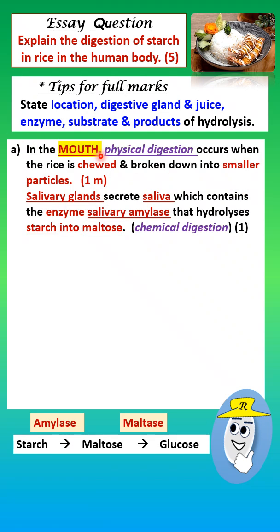Start with the first organ, which is the mouth. In the mouth, physical digestion occurs when the rice is chewed and broken down into smaller particles. Mention the word 'physical digestion,' which is different from chemical digestion. In physical digestion, the rice is physically broken down into smaller particles to increase the total surface area for hydrolysis by enzymes.